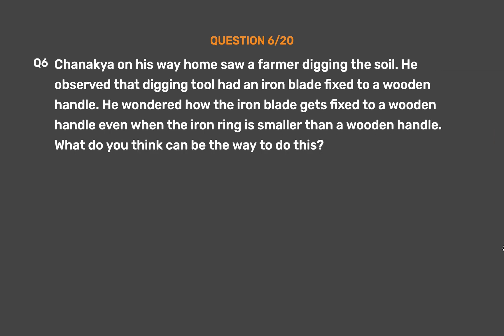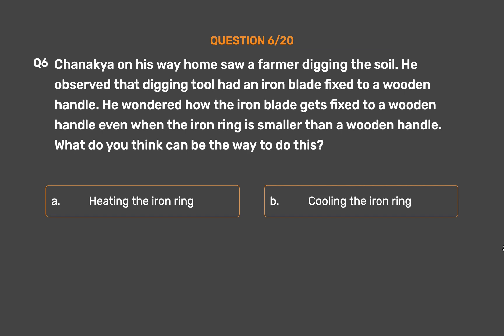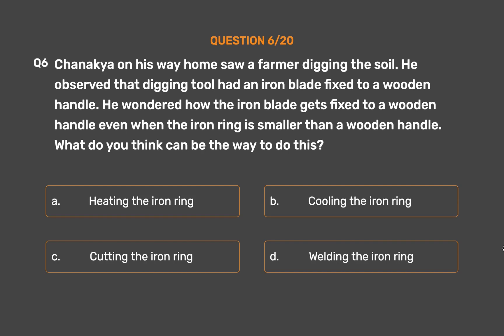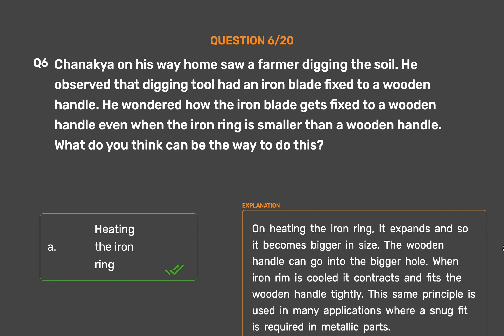Question number 6: Chanakya on his way home saw a farmer digging the soil. He observed that the digging tool had an iron blade fixed to a wooden handle. He wondered how the iron blade gets fixed to a wooden handle even when the iron ring is smaller than the wooden handle. What do you think can be the way to do this?